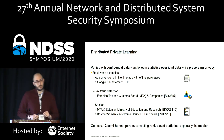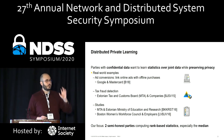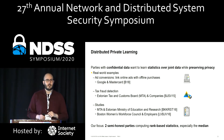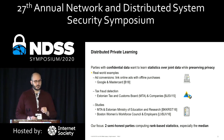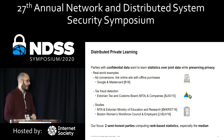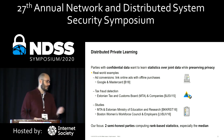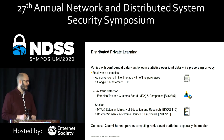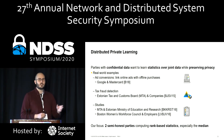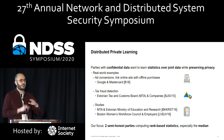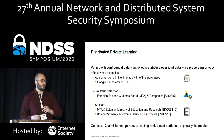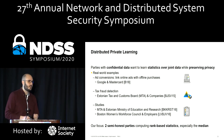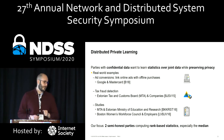There are different real-world examples. One is ad conversion to link online ads with offline purchases — Google and MasterCard are reportedly working together to do just that. There's also tax fraud detection from Cybernetica ShareMind, where the Estonian tax and customs boards and different companies work together. And there are studies on correlations between time to finish studies and being a working student, as well as work on the greater Boston area to find wage disparities and wage gaps.